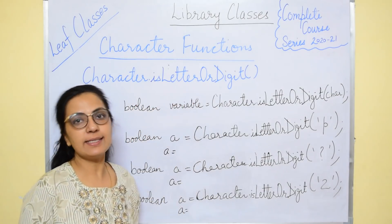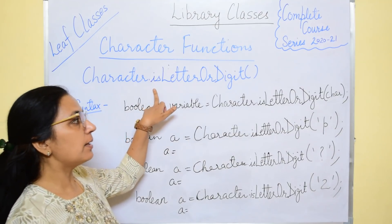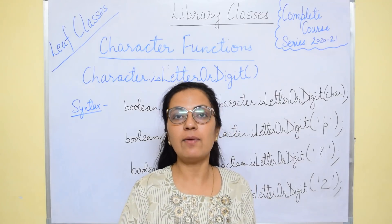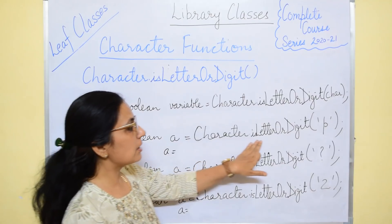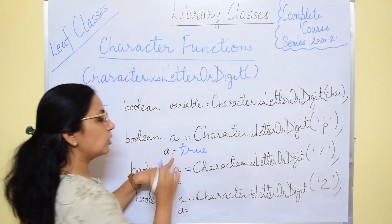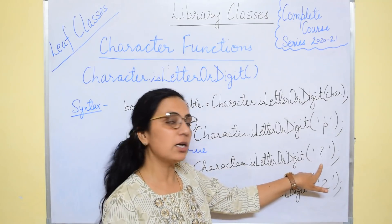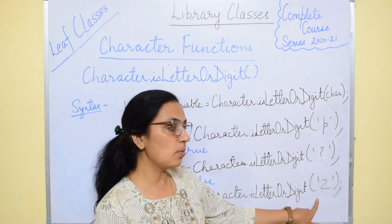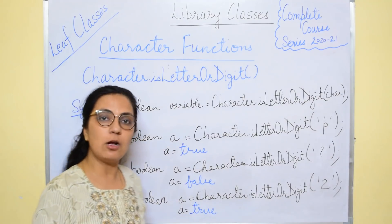The next function is Character.isLetterOrDigit(). In the function name, L, O, and D are written in capital. This function returns true if the given character argument is a letter or a digit; otherwise in all remaining cases it returns false. For example, Character.isLetterOrDigit('p') returns true since p is a letter. Character.isLetterOrDigit('?') returns false since a question mark is neither a letter nor a digit. And Character.isLetterOrDigit('2') returns true since 2 is a digit.